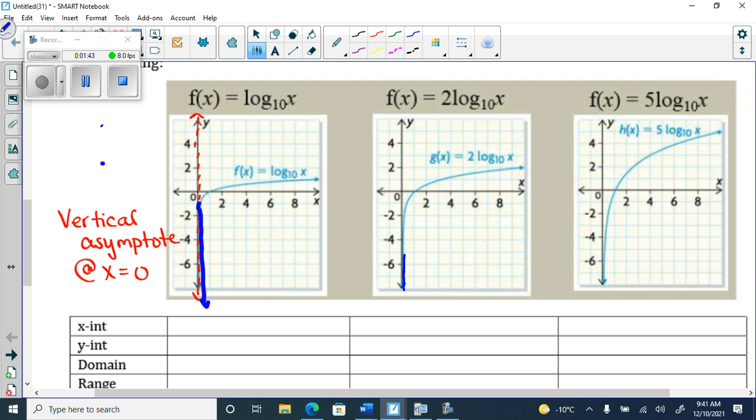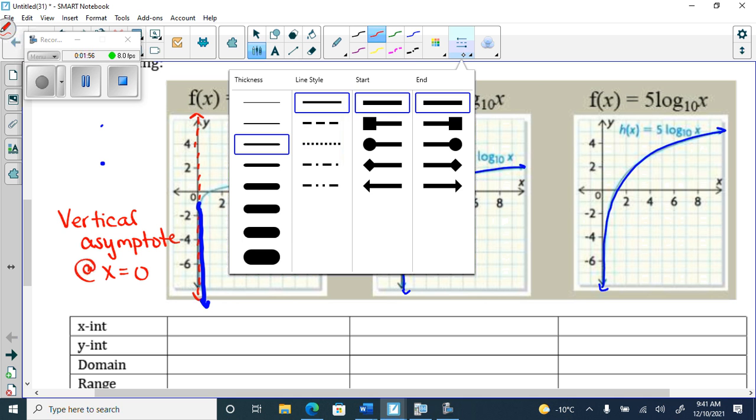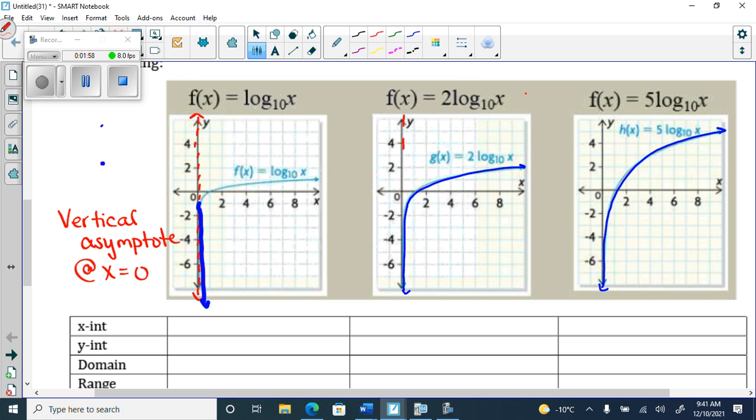Still runs along here. There still is, and you should draw, when you draw these, you should always draw the dashed line on the y-axis because you have a vertical asymptote there.